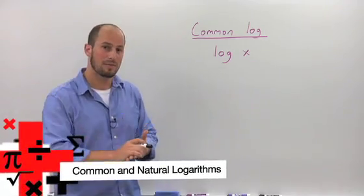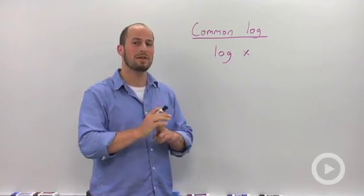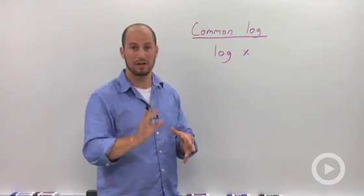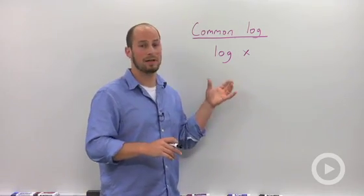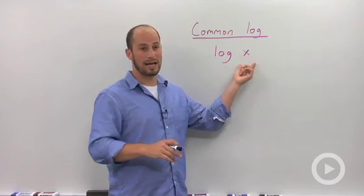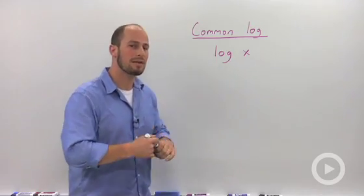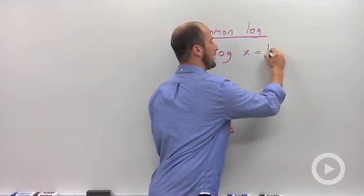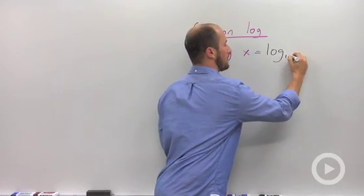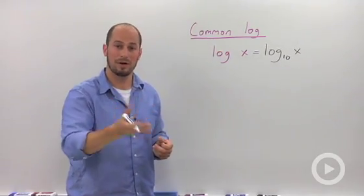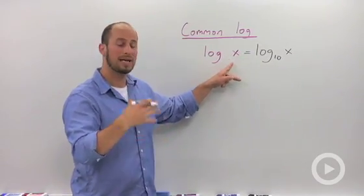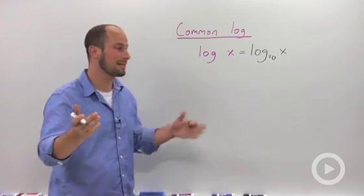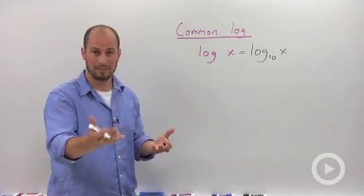Logs of special bases. What we're going to talk about now is two different logs that have a base that arises enough that we have special notation for it. The first one is what we call the common log, which is just written log x. Now there is really a base — there's no base written here — but there really is a base and it's going to be base 10. So whenever you see a log with no base, with no little number down there, it's really going to be log base 10. It's used enough that instead of writing 10 every single time, we just leave it off. We know that it's base 10.